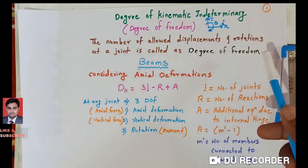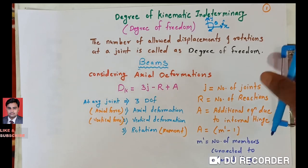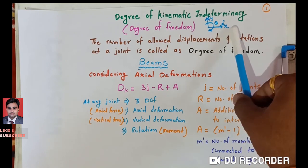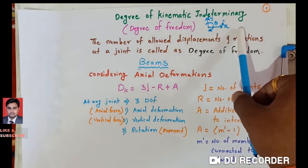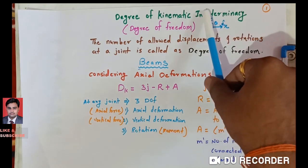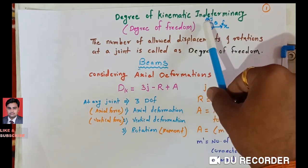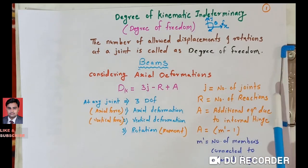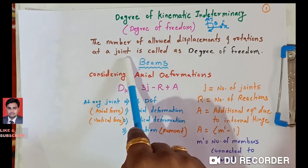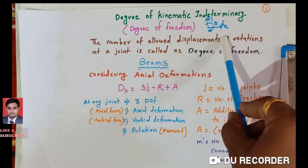Displacements in the x-direction are called axial deformations, caused by horizontal or axial forces. Vertical deformations are caused by vertical forces, and rotation is caused by moment. The number of allowed displacements and rotations at a joint is called the degrees of freedom. At any joint, there are always 3 degrees of freedom.